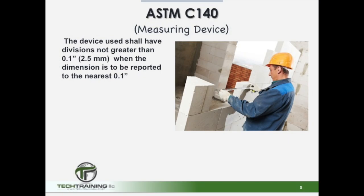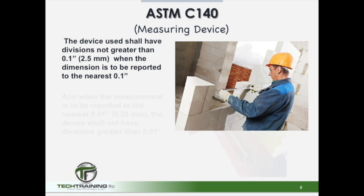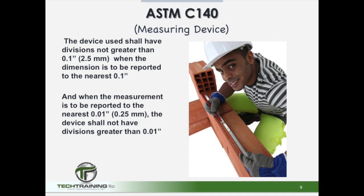After selecting our units we want to measure the units. The device used to measure the units shall have divisions not greater than 0.1 inches or 2.5 mm when the dimension is to be reported to the nearest 0.1 inches. And if the measurements shall be reported to the nearest 0.01 inches, then the divisions of the measuring device shall not be greater than 0.01 inches.